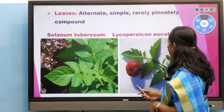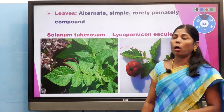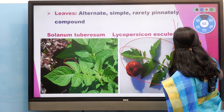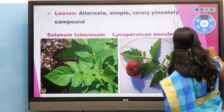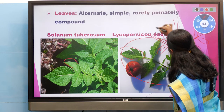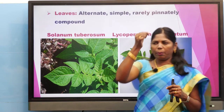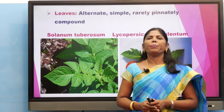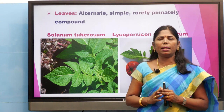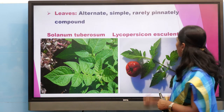Rarely the leaves are pinnately compound — pinnate is like a feather structure with small leaflets on the main rachis. This compound leaf is arranged on the main axis in alternate conditions. Examples are Solanum tuberosum and Lycopersicon esculentum (tomato).